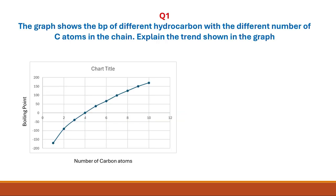Question 1: the graph shows the boiling point of different hydrocarbons with the different number of carbon atoms in the chain. Explain the trend shown in the graph.